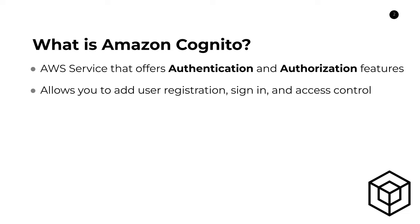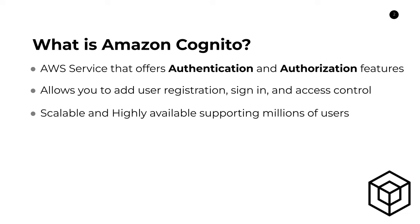Amazon Cognito as a whole allows you to add features like user registration, user sign-in, and access control to your applications. If you're building a web application and want login functionality where you can collect users and their information, and only let signed-in users access your APIs, these are the kinds of things you can do with Amazon Cognito. It's a scalable and highly available AWS service that supports up to 40 million users out of the box. It's cost effective and totally managed by AWS — all user data is stored within Cognito, with no compute or storage for you to worry about.